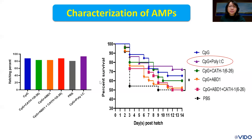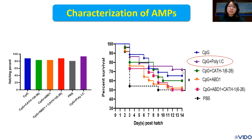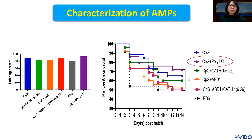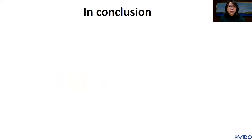We then tried to combine CpG with the peptides to see whether it could enhance the protection. In this experiment we also included the combination of CpG and poly IC as a control. The results showed that CpG and poly IC still had the highest protection. The combination of CpG and peptides was not significantly different from the control group. Importantly, the administration of these innate immune stimulants did not affect the hatching rate or body weight gain of day-old chicks, and gave quite high protection, especially CpG alone and the combination of CpG and poly IC.